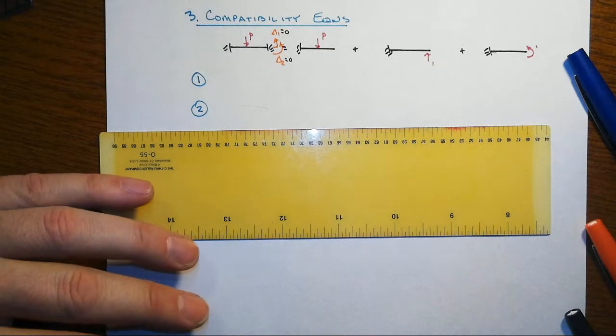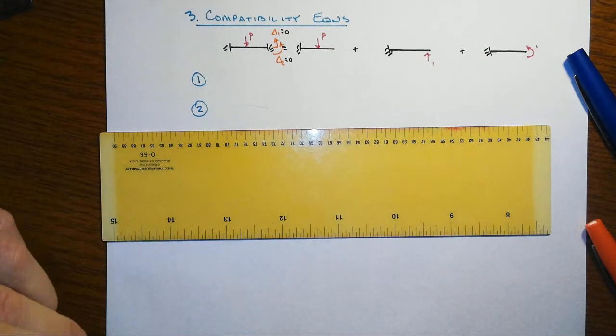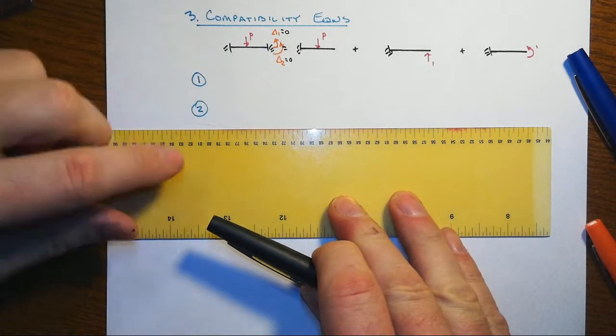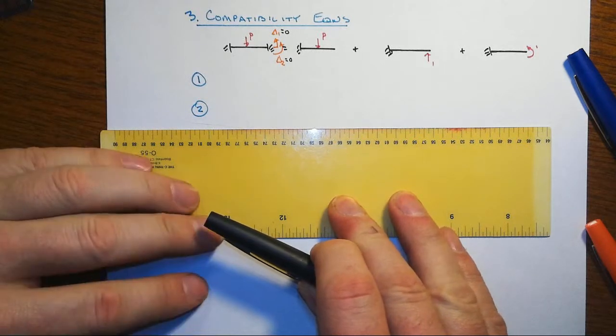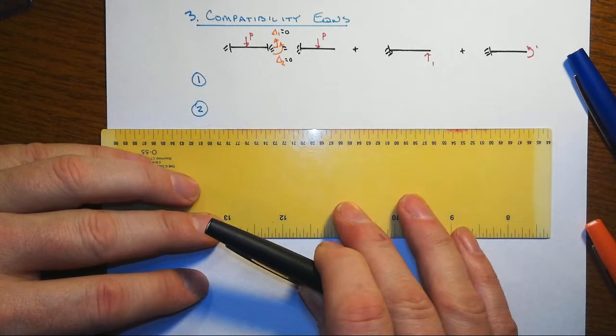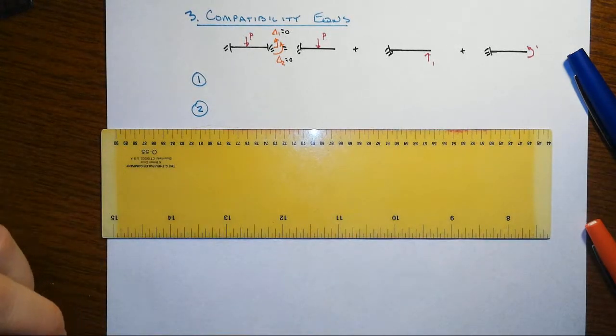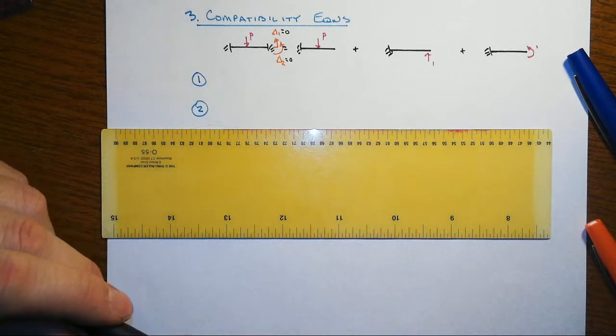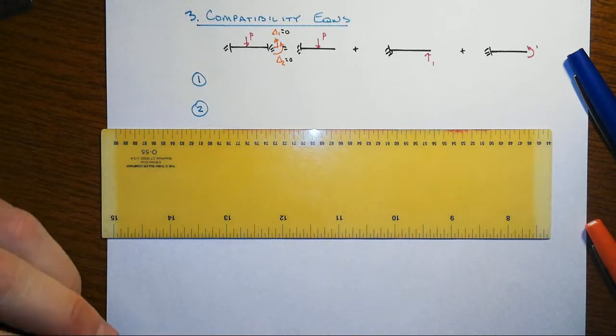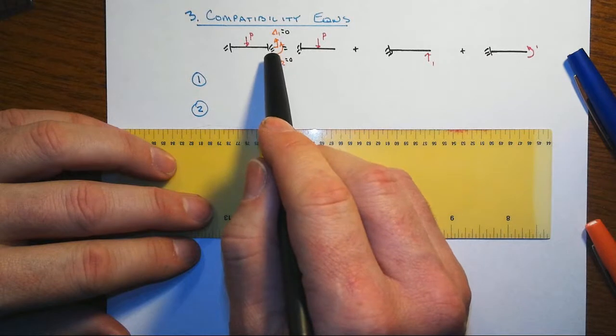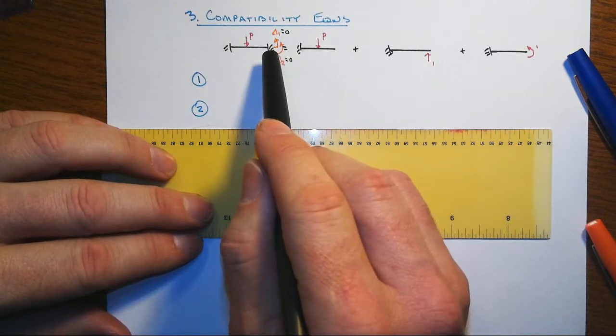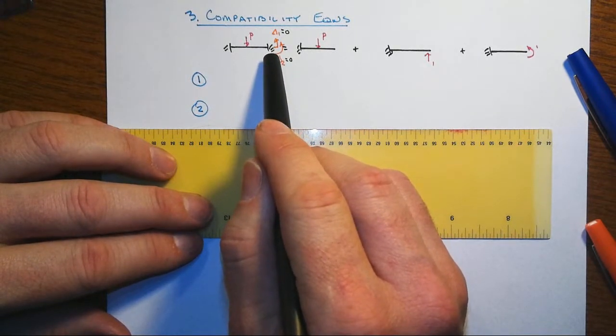In this next step in our solution of this fix-fix beam problem, we're going to write the compatibility equations, and then that will set us up finally to execute our math steps and solve for our redundant reactions. We've stripped off these two reactions here at the right fixed end.